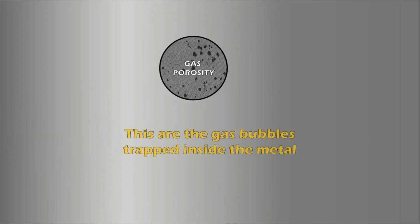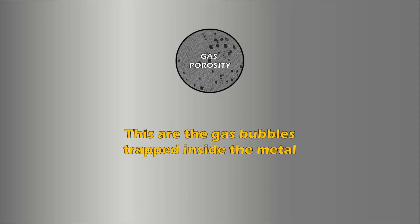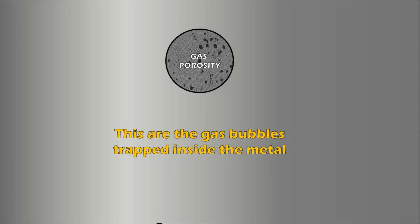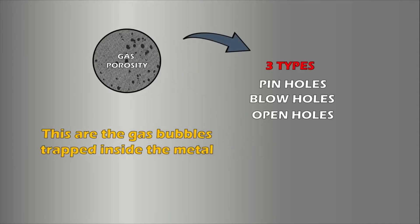Let's start with gas porosity. When cast metal solidifies in a mold, it can't hold as much gas as it does in liquid form, so it releases it. That is part of the reason molds are permeable — to allow gas to escape. Several factors can cause impermeability, which can result in gas bubbles getting trapped inside the metal. There are three types of casting defects related to gas porosity: pin holes, surface blow holes, and open holes.